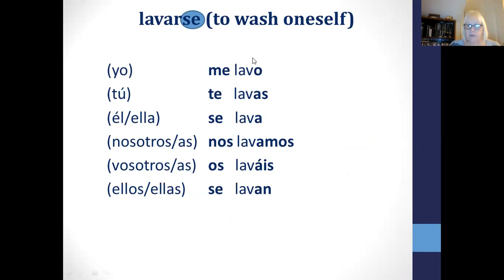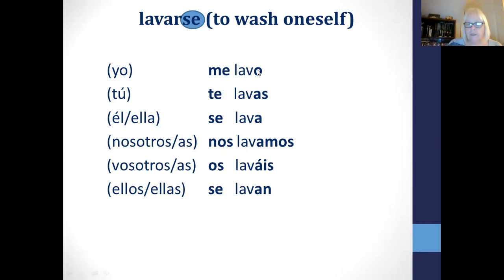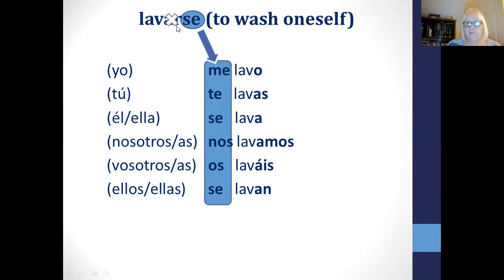We've got the verb lavarse — to wash oneself. If you have it without the SE, just lavar — lavo, lavas, lava, lavamos, laváis, lavan — that's to wash something. You might use that to say I wash the car, lavo el coche, or I wash the clothes, lavo la ropa. But if you're washing yourself, then it's reflexive.